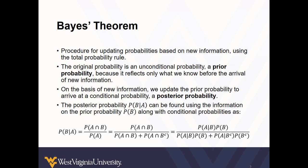Bayes' Theorem is a procedure for updating probabilities based on new information using the total probability rule. We often teach Bayes' Theorem and forget about the total probability rule, but it's good to have that background. The original probability we work with is an unconditional probability — a prior probability — because it reflects only what we know before the arrival of new information.